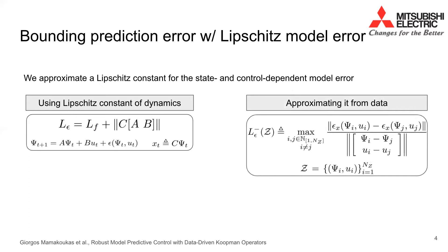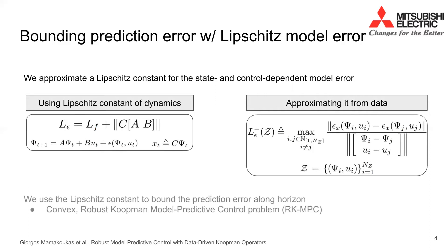We then use the Lipschitz constant to bound the prediction error along the planning horizon and formulate a convex, robust, finite horizon model predictive control problem that is real-time implementable. For more details, I invite you to refer to our paper.